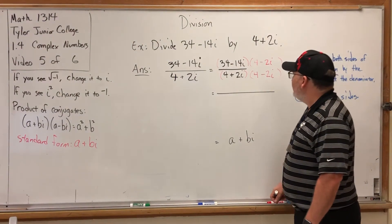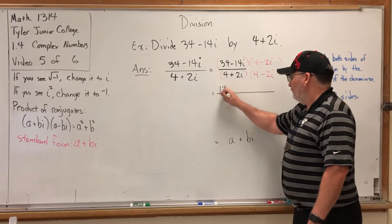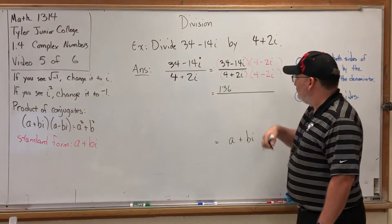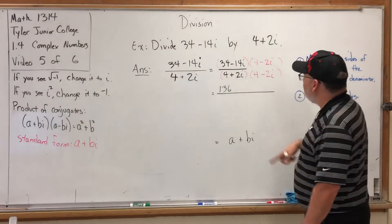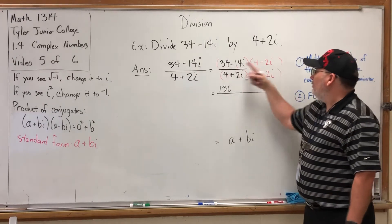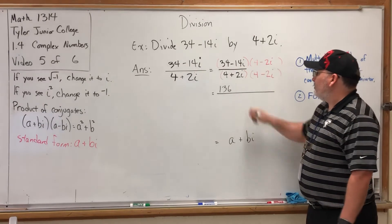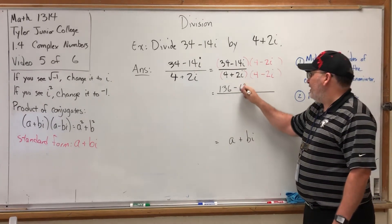For example, starting on the top, the first part of the FOIL process is 34 × 4, which I believe is 136. Let me do it again—yes, 136. The outside part of FOIL: 34 × -2i is -68i.